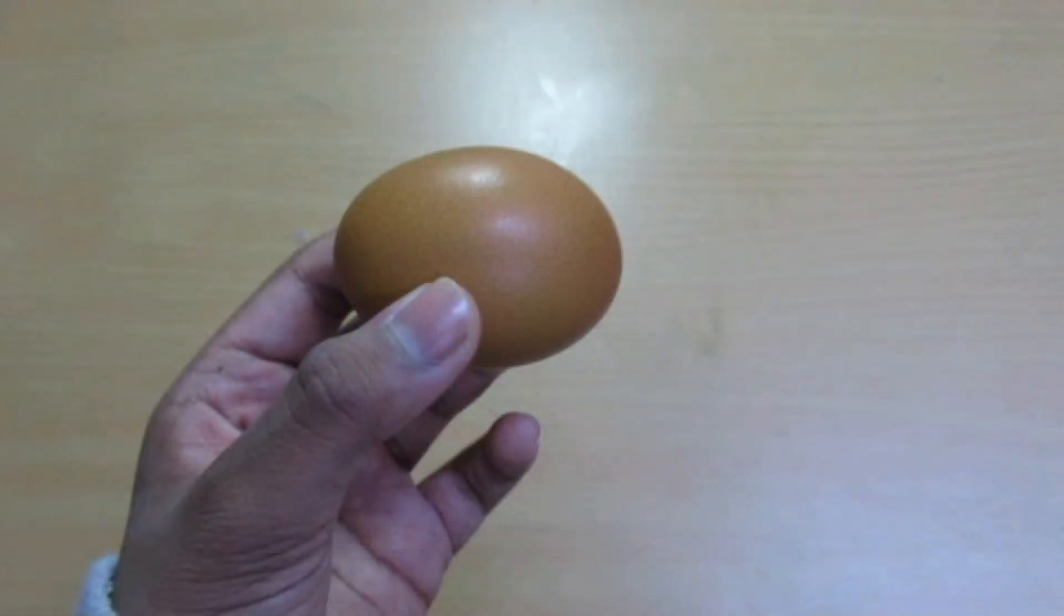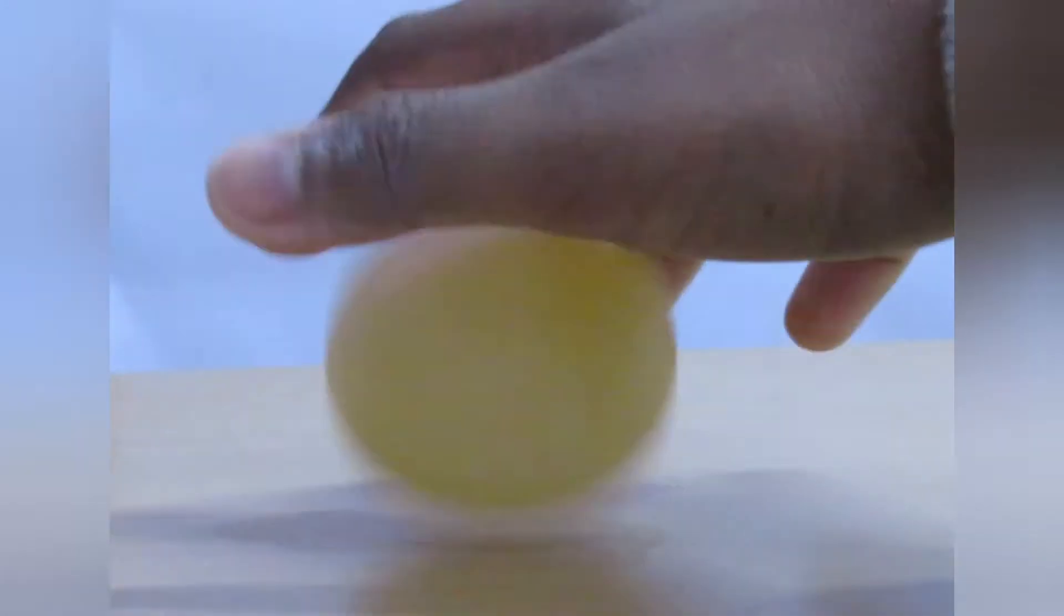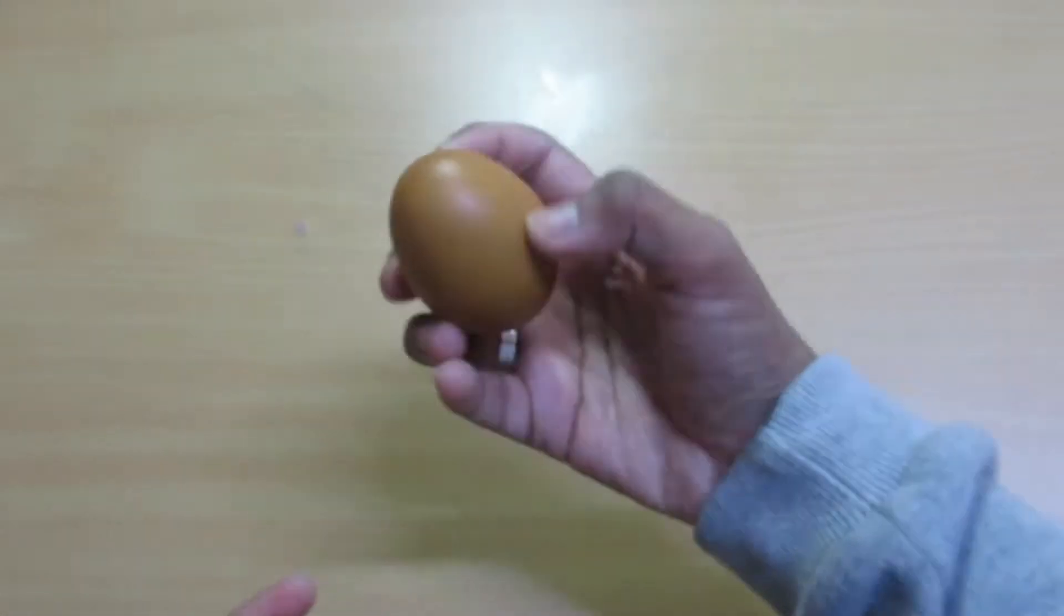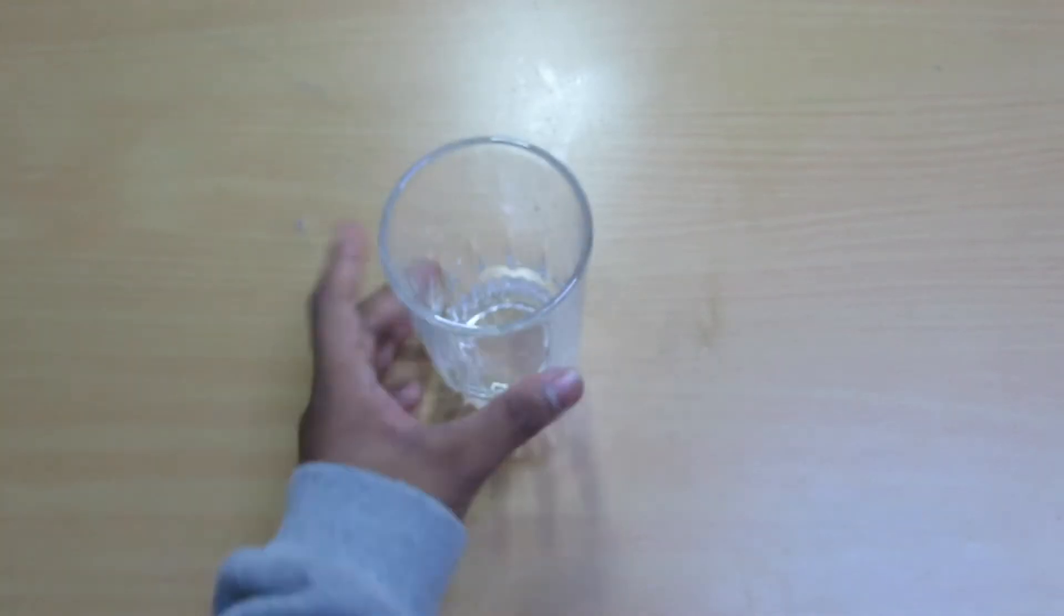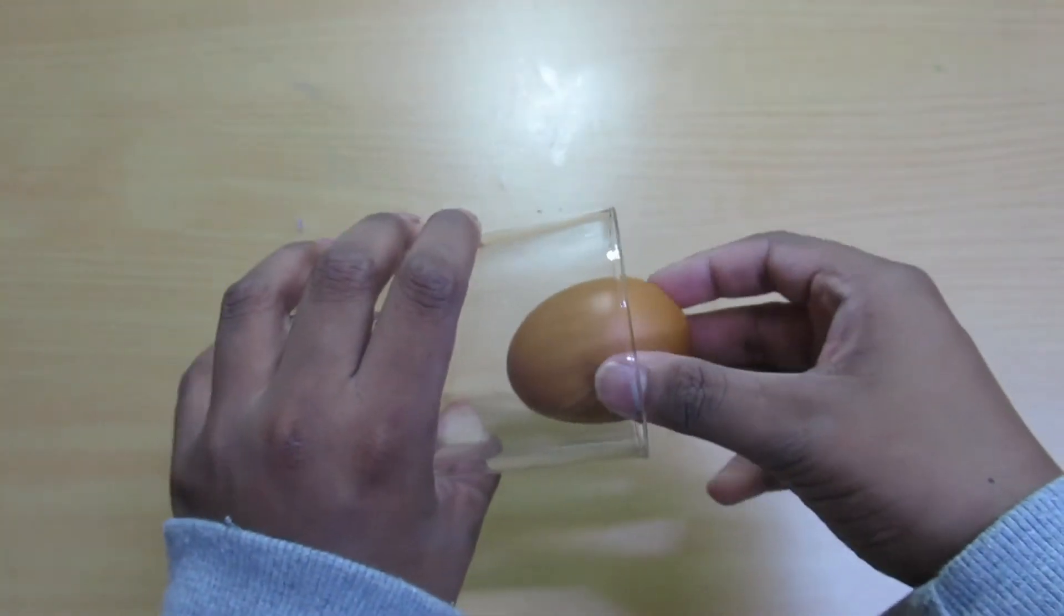Hi friends, welcome back to my channel. Today I will show you two easy science experiments that you can try at home, so let's get started. The first experiment is how to turn an ordinary egg to this really cool squeegee translucent egg which even bounces.